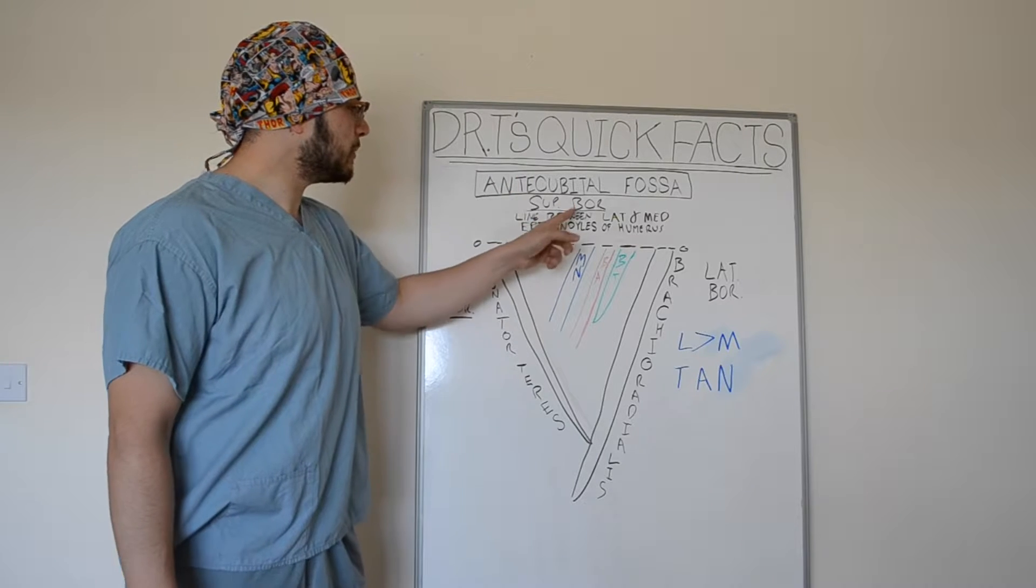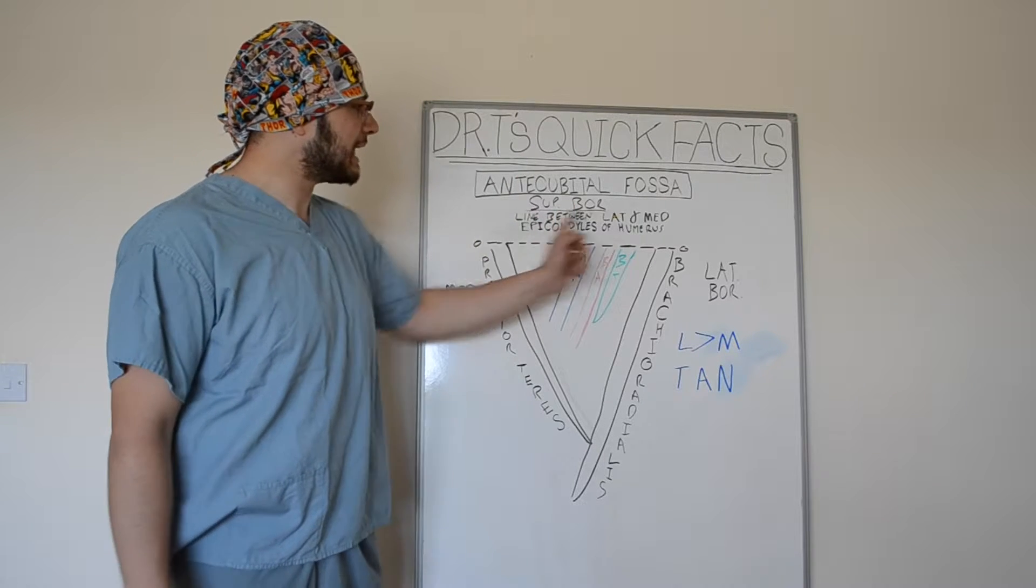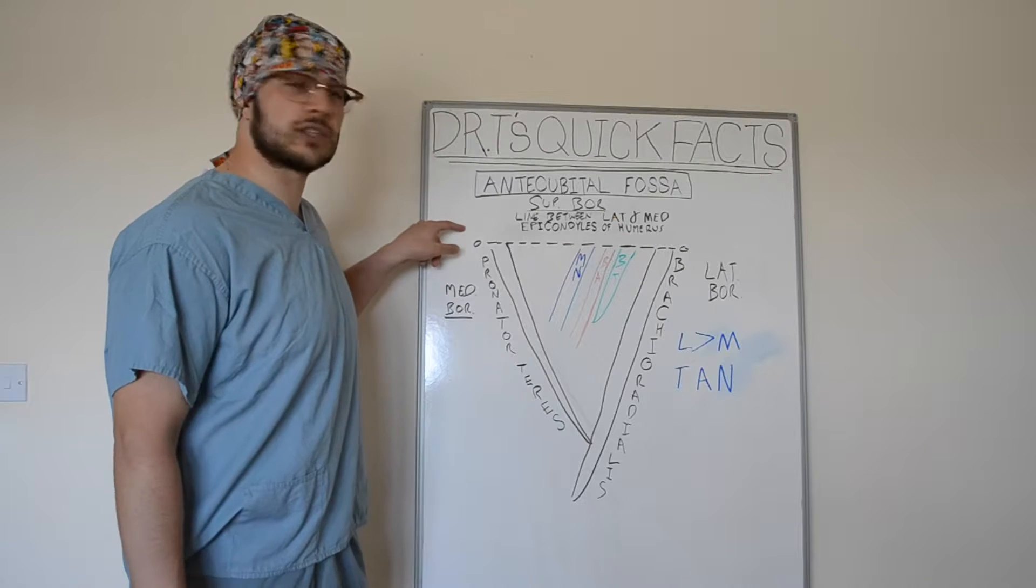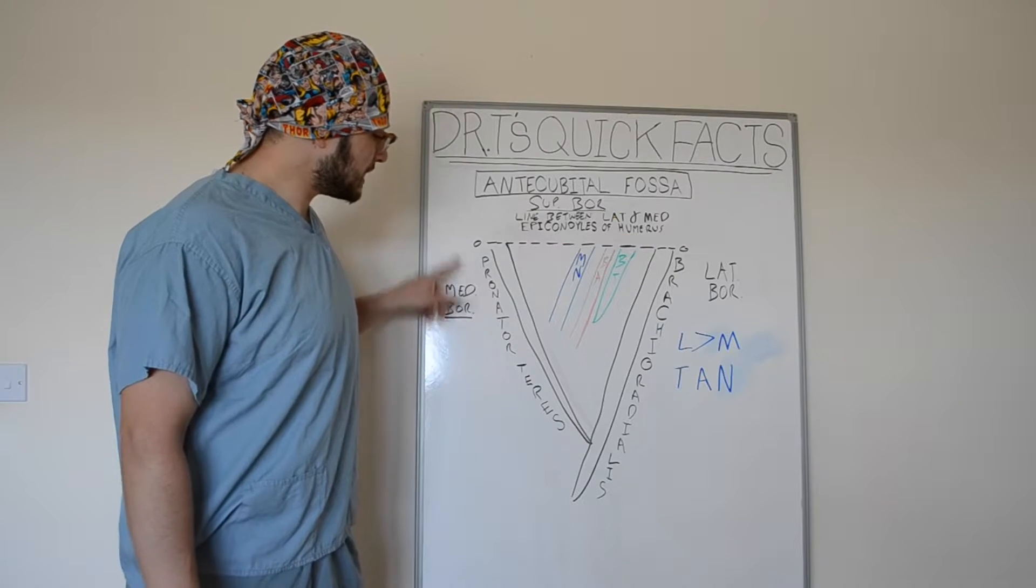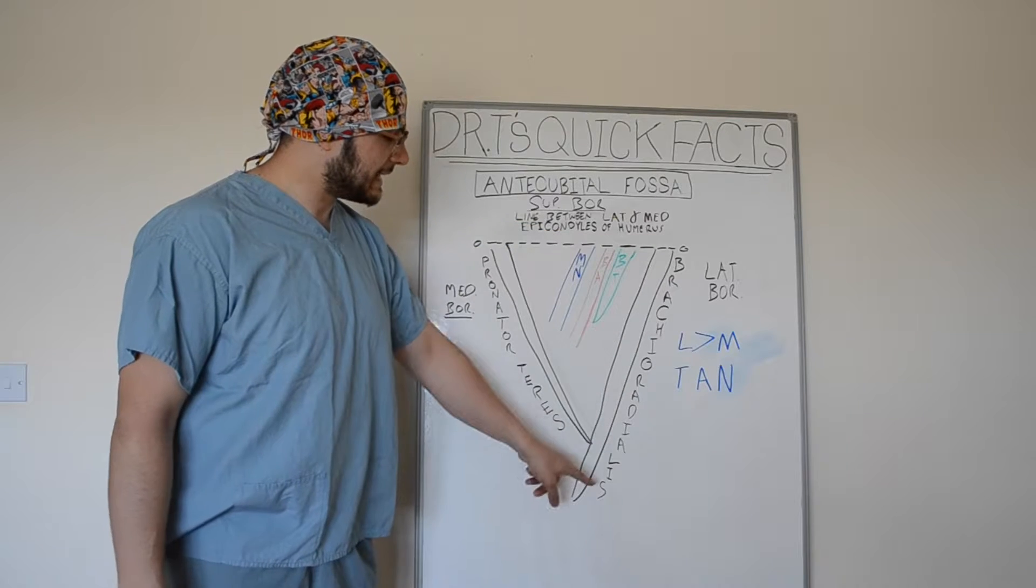Now the borders of this region: the superior border is an imaginary line between the lateral and medial epicondyles of the humerus. The medial border is pronator teres. The lateral border is brachioradialis.